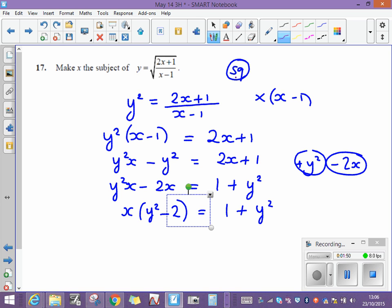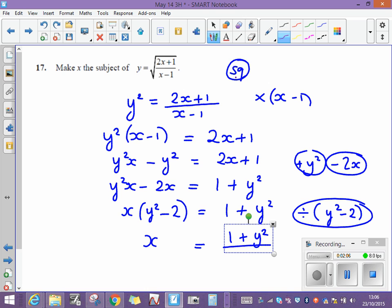I'm now going to divide by the bracket on the left. So I'm going to divide by y squared minus 2. So on the left-hand side, I'm just going to be left with x. And on the right-hand side, I've got 1 plus y squared divided by y squared minus 2.